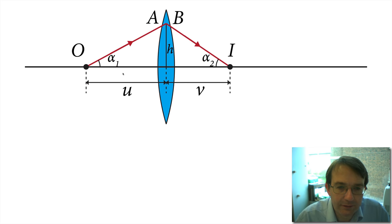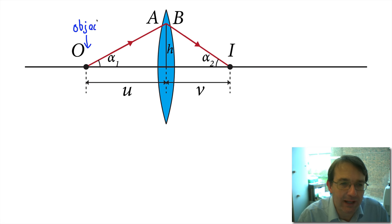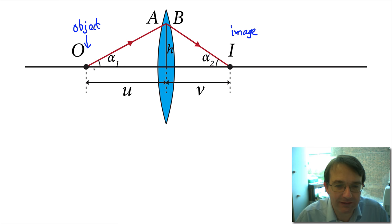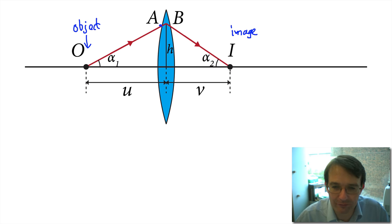Here we have a lens, and we've taken the simplest possible example. We have a point-like object sitting on the optical axis of the lens — the axis that goes through the center of symmetry. The object is being imaged on the other side to a point-like image. We're considering one ray of light that goes out at an angle α1, hits the lens at point A, gets refracted, then hits point B where it leaves the lens and gets refracted again onto the trajectory forming the image I.